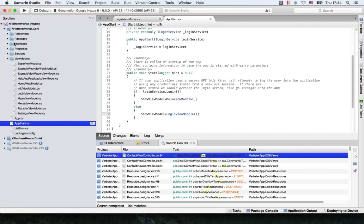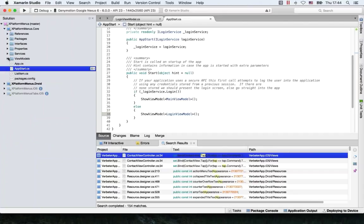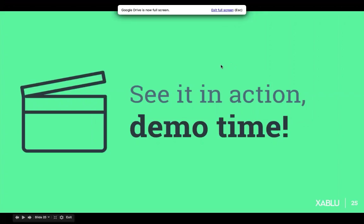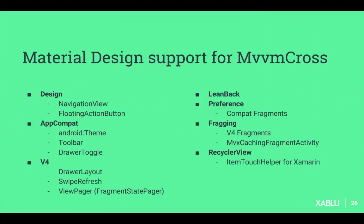I would really encourage you to check out the sample in the MvvmCross samples repository to really understand how this all works. What you already saw in the sample is that we have support for material design and AppCompat within MvvmCross. We have special classes available for all kinds of support libraries. One of the cool things is the MvxCachingFragmentedActivity, which handles the whole lifecycle of fragments within your app — if you need to manually handle your fragments, it can be a lot of pain dealing with going to the background, rotating your screen, and all this lifecycle stuff that Android does.